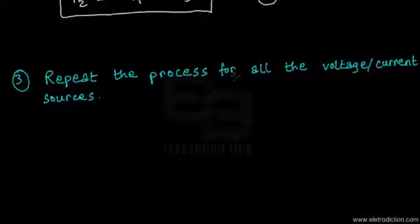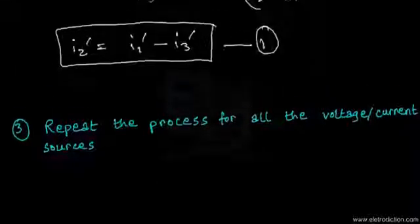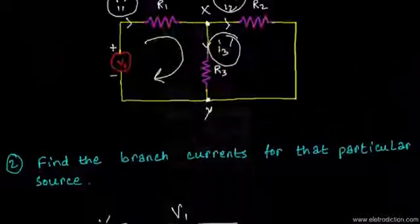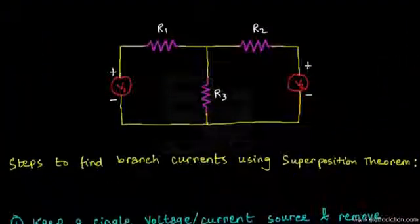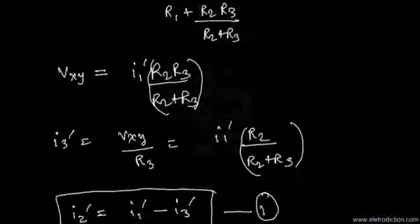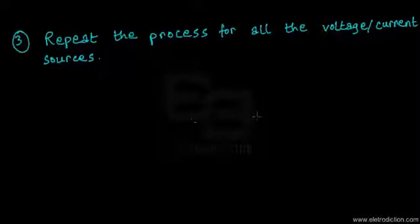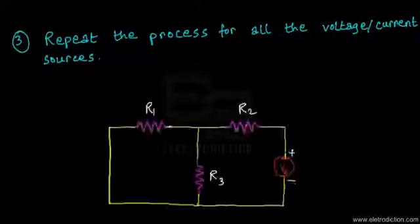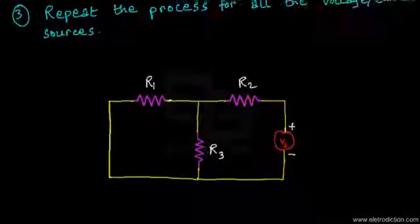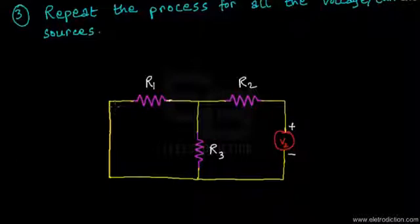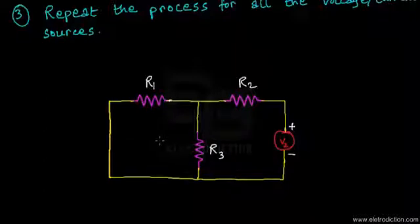Step three states: repeat the process for all voltage and current sources. We now apply the same procedure for source V2 by modifying the original network — keeping only V2 active and shorting V1 — giving us a new simplified network to analyse.